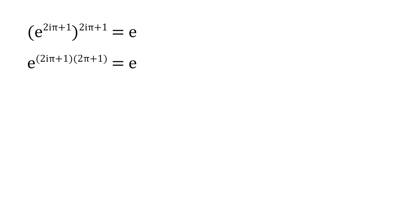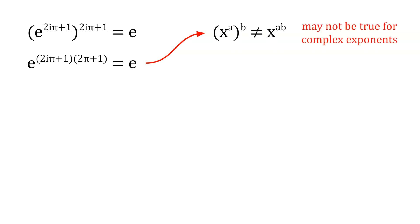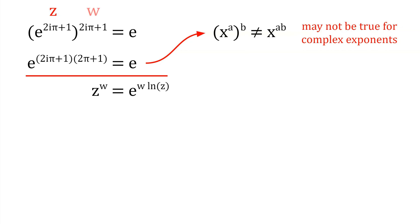While the first equation is true, the second equation is not true. The mistake is in assuming the power rule — x to the power of a, then that to the power of b, is equal to x to the power of ab. For complex exponentiation, this is not always true. The proper definition is to use the formula z to the power of w is equal to e to the power of w times the natural log of z. Here z is represented by e to the power of 2i pi plus 1, and w is represented by the power of 2i pi plus 1.